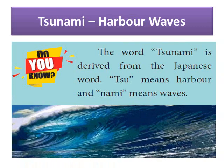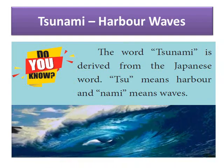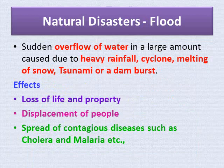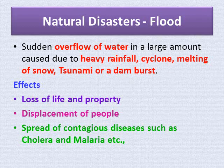Now let us learn about another natural disaster — flood. A flood is the sudden overflow of water in large amounts. It is caused due to heavy rainfall, cyclone, melting of snow, tsunami, or a dam bursting. The effects of a flood include loss of life and property, displacement of people, and the spread of contagious diseases such as cholera and malaria, as these are waterborne diseases.